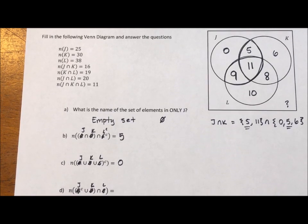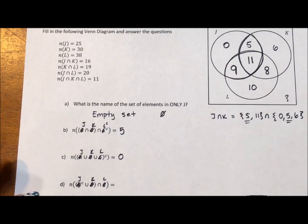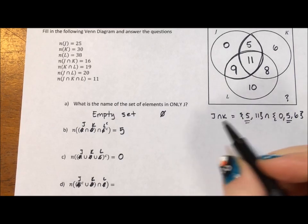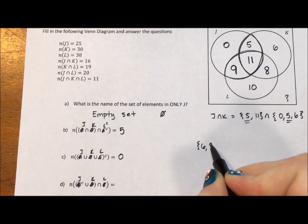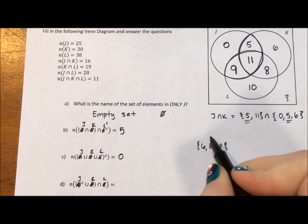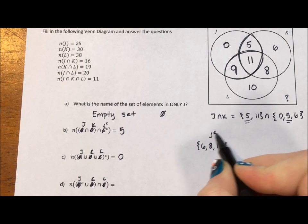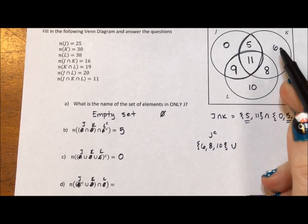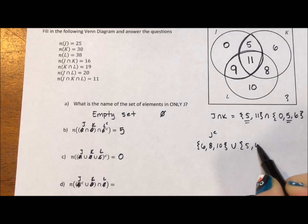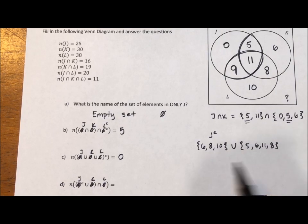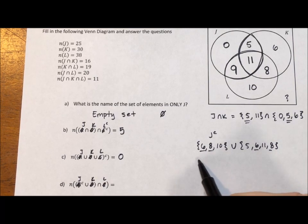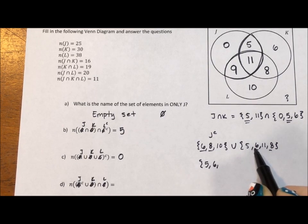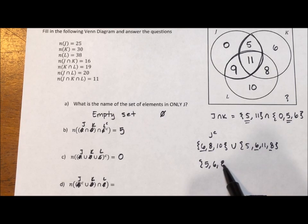Next, we have J complement, which is everything that's not J. So that's going to be the 6, 8, and 10. We want to do the union of that and K. Well, K is 5, 6, 11, and 8. Union means we're putting them together. Well, we don't write the 6 twice, and we don't write the 8 twice. So we have 5, 6, 8, 10, and 11.